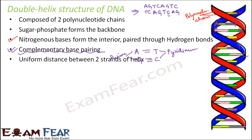A uniform distance is maintained between the two strands of the helix from start to end — the entire chain is of uniform thickness, like stairs of the same width. This is because every time there is one purine pairing with one pyrimidine. Purines are all double-ring structures and pyrimidines are all single-ring structures, so a bond between a double ring and a single ring always occupies the same width. As a result, the distance between A-T and G-C pairs remains the same, maintaining uniform distance between the two strands.